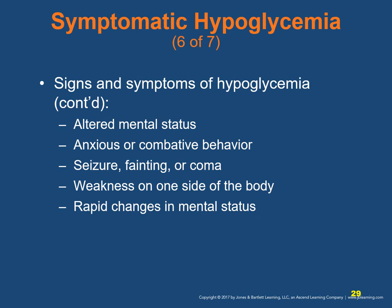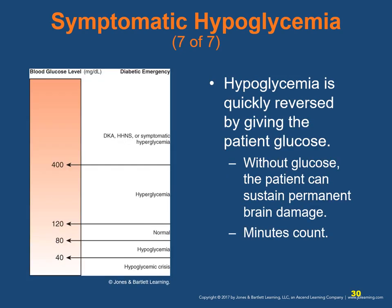There can also be rapid changes in mental status, so be prepared. Hypoglycemia is quickly reversed by giving the patient glucose. Without glucose, however, the patient could sustain permanent brain damage — minutes absolutely count.